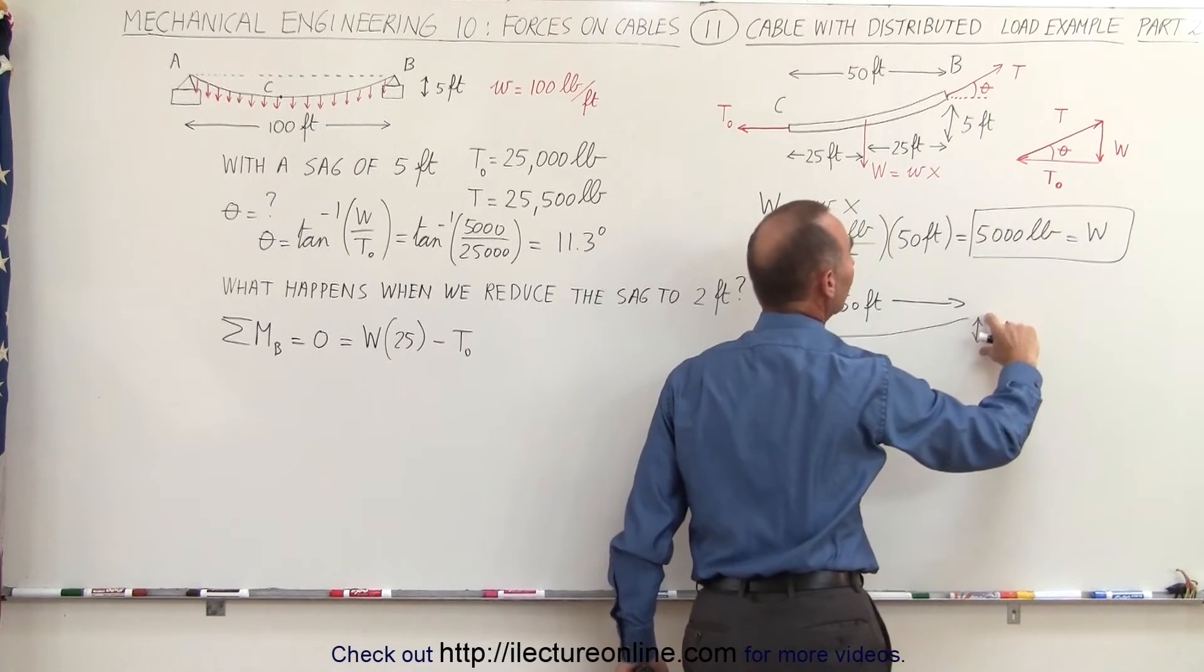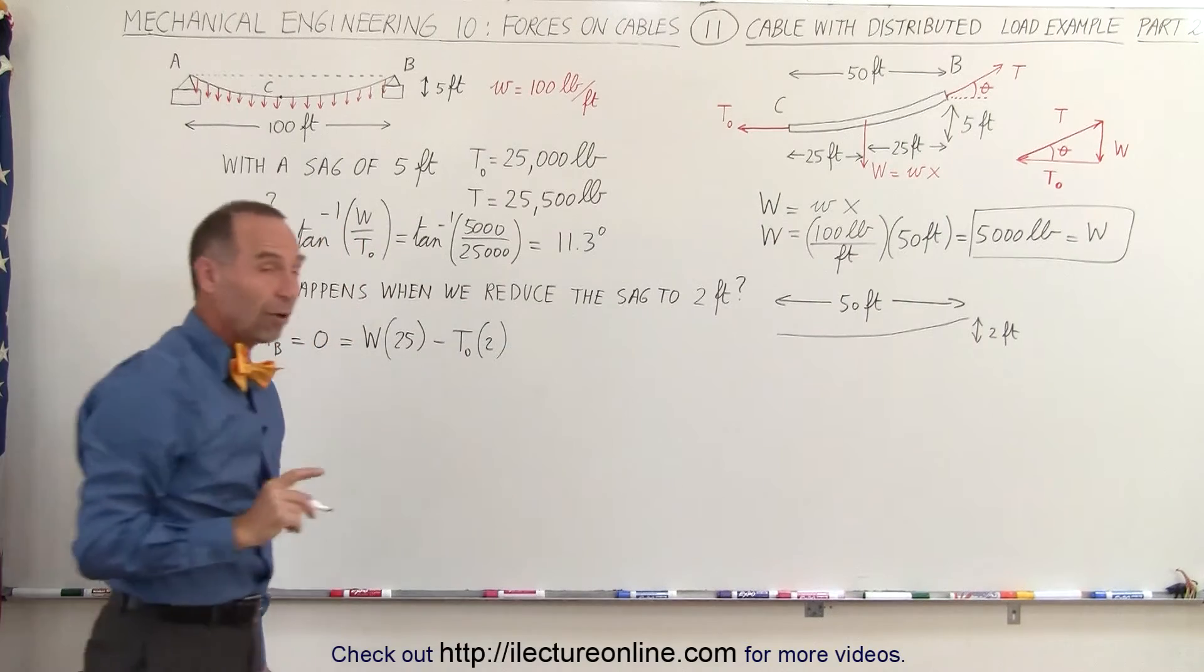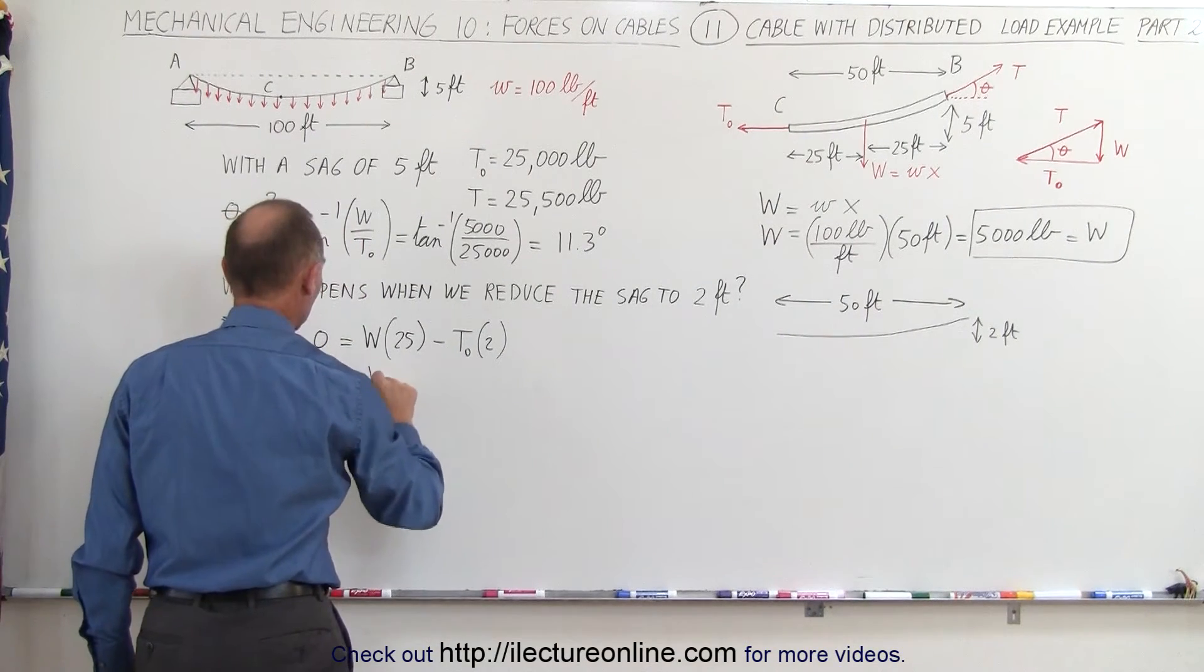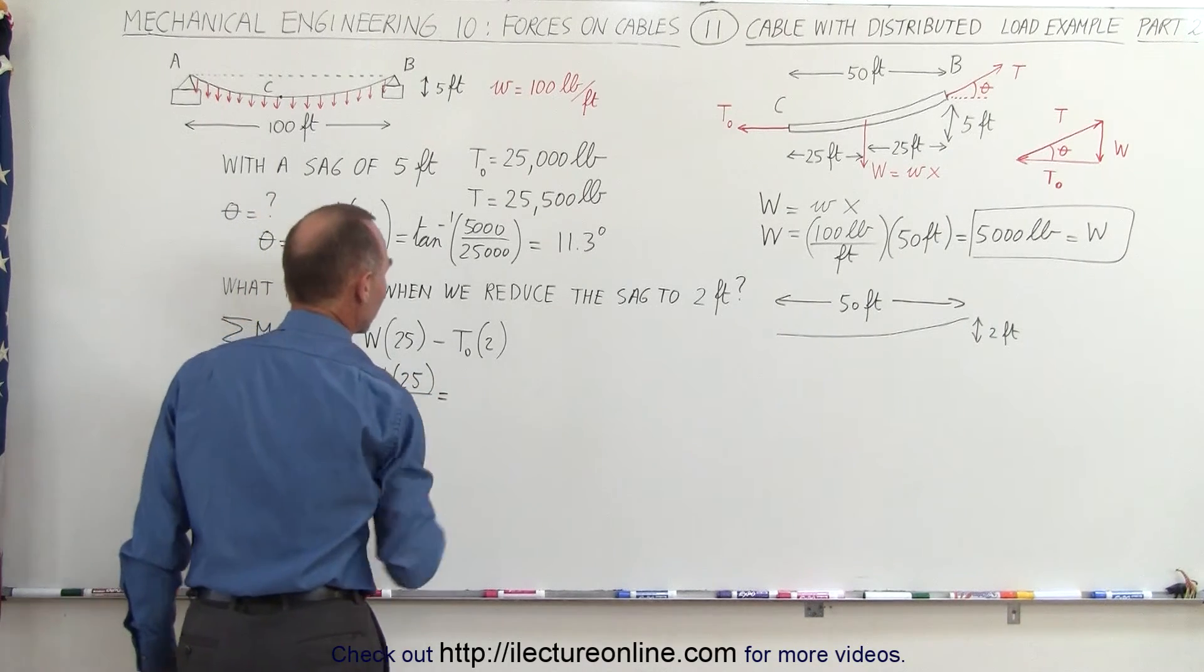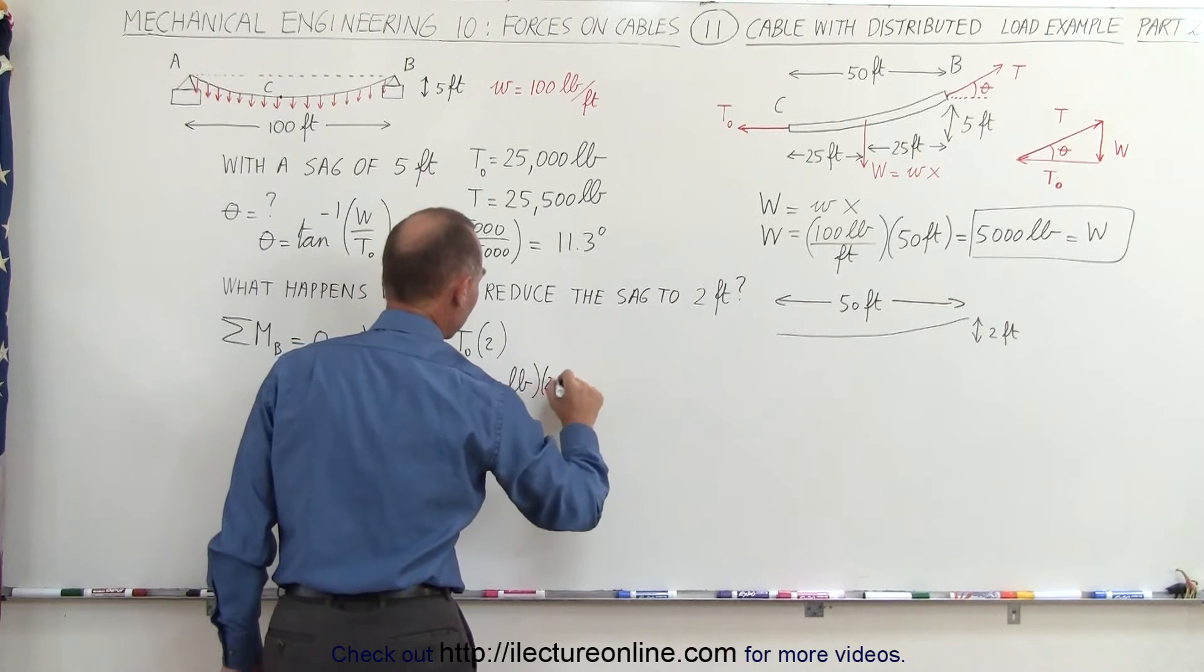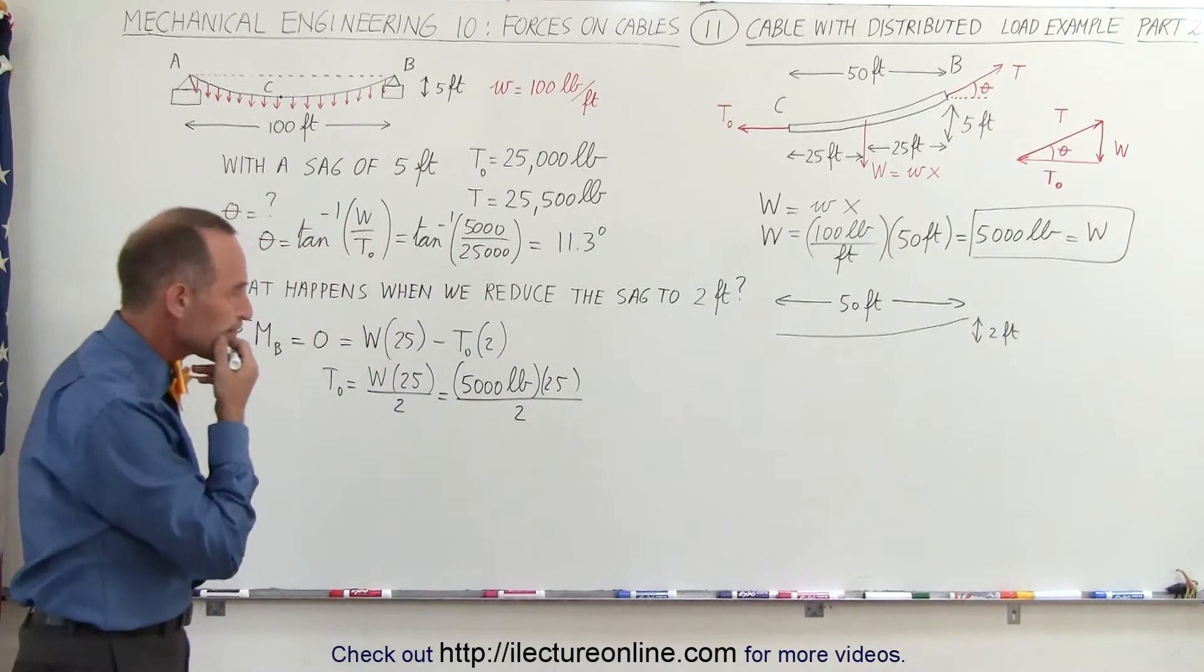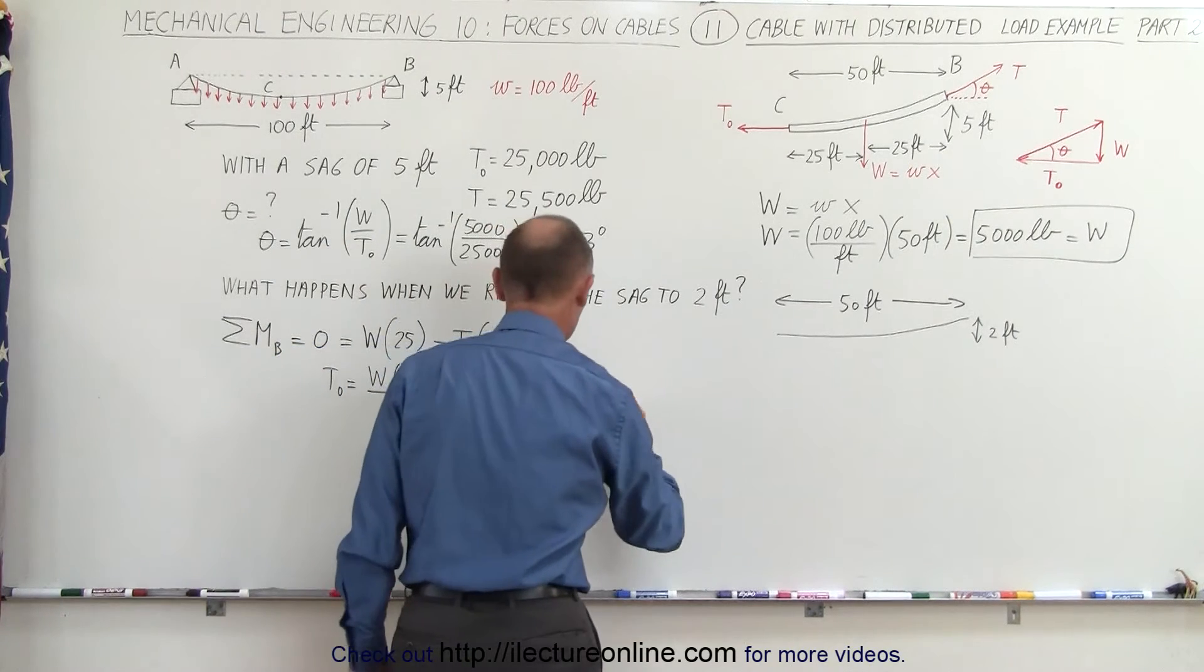And so this becomes two. Solving that for T sub not, we get T sub not is equal to W times 25 divided by two, which in this case W is still 5,000 pounds, that's the total load, times 25 divided by two. That would be 62,500 pounds.